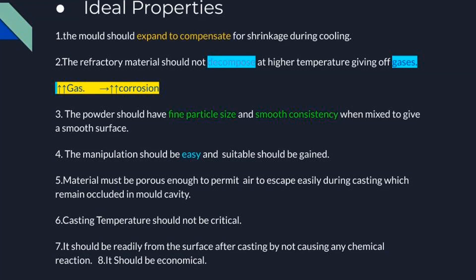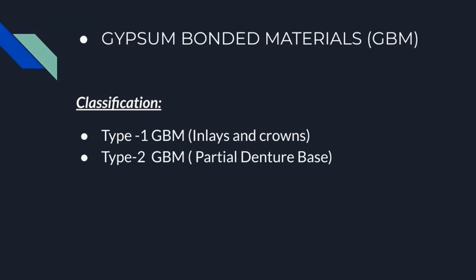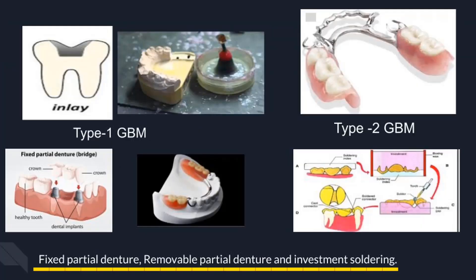Now we will discuss gypsum bonded material. According to the ADA, gypsum bonded materials are of two types: Type 1 and Type 2. Type 1 is for casting of inlays or crowns, and Type 2 is for casting partial denture bases, as well as fixed and removable partial denture frameworks using gold alloy and other low-fusing alloys. It is also used as an investment material for soldering.